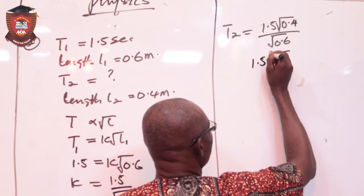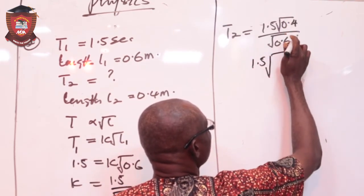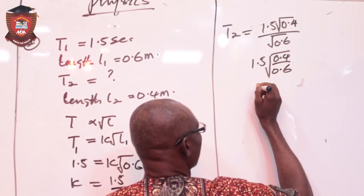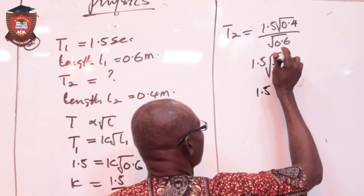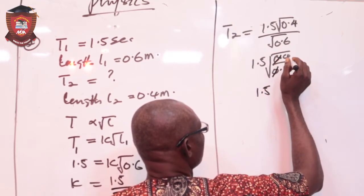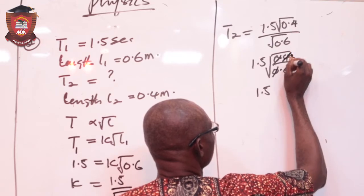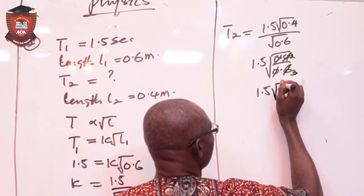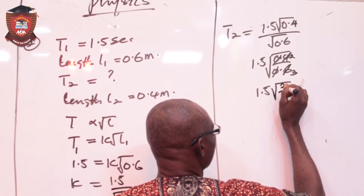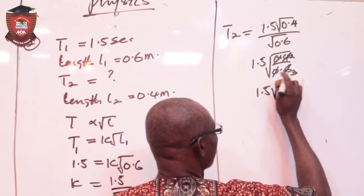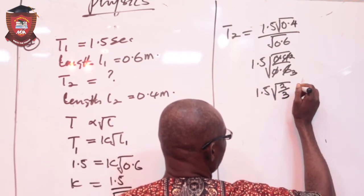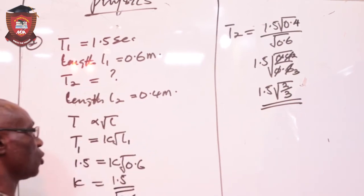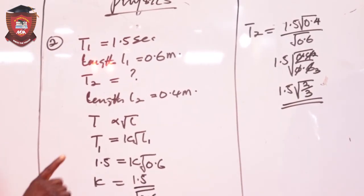By saying 1.5, all root. This is root, this is also root, 0.4 over 0.6. So 1.5, I can cancel this and reduce this to 2, this one to 3. So what I have under here is 2 over 3. So 1.5 root 2 over 3 is now the answer to T2. That's the period 2. So that's the answer to that question.